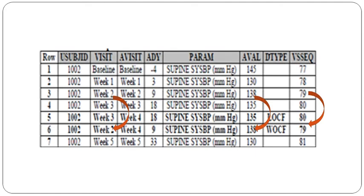In the case of WOCF, if you see the post-baseline method — apart from the baseline, week one, two, three, and four — if 130 is the worst value, we carry forward this worst value to week four. Here you can see week two is also carry-forwarded; visit sequence 79 is carry-forwarded. Worst Observation Carry Forward means the worst value present during the post-baseline visits is carried forward to the particular visit, if the statistician suggests deriving WOCF. That time we need to populate the WOCF in the DTYPE variable.